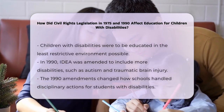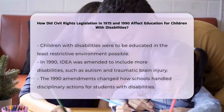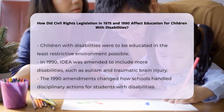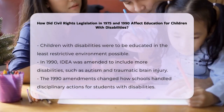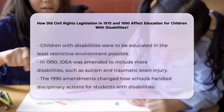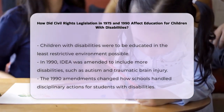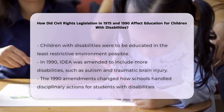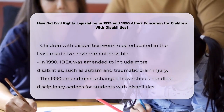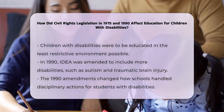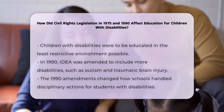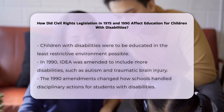Fast forward to 1990, when the EAHCA was amended and renamed the Individuals with Disabilities Education Act, IDEA. This update expanded the law to include more disabilities, such as autism and traumatic brain injury. It also made significant changes to how schools handle disciplinary actions for students with disabilities.